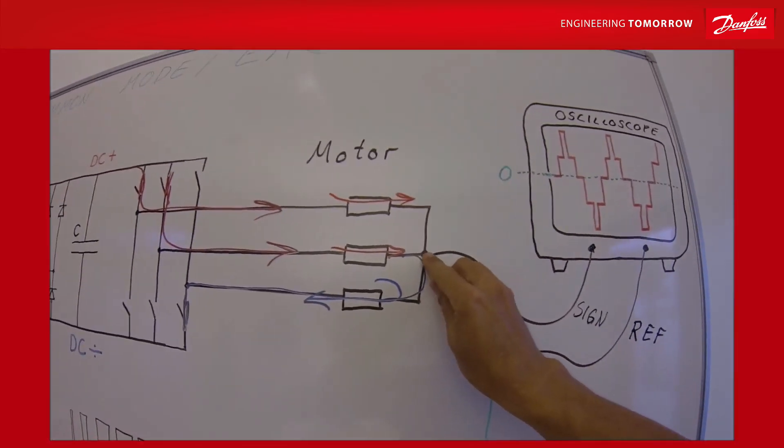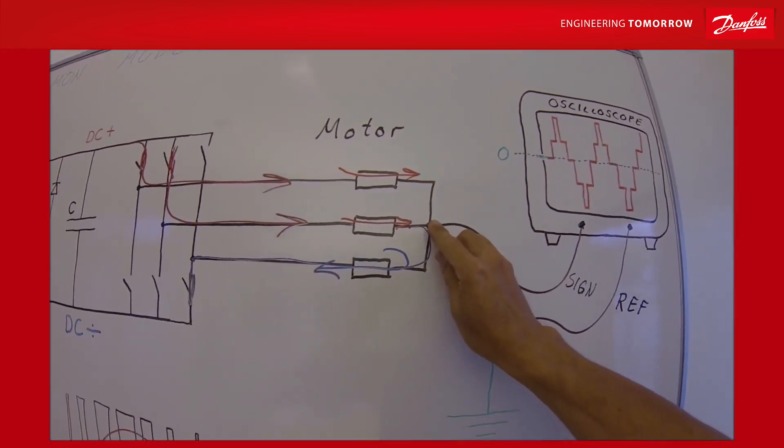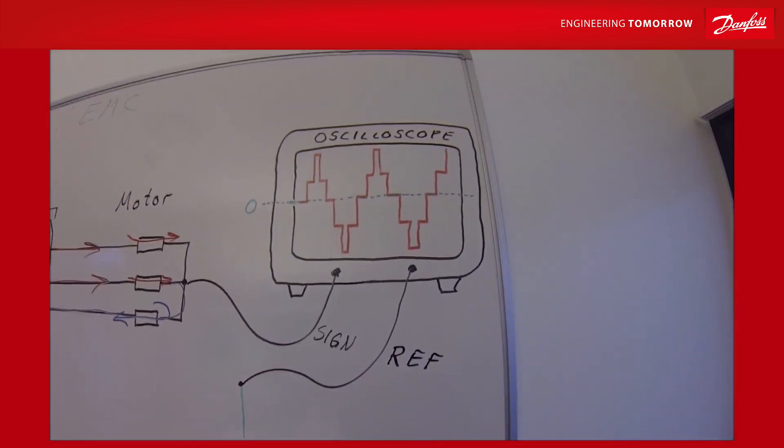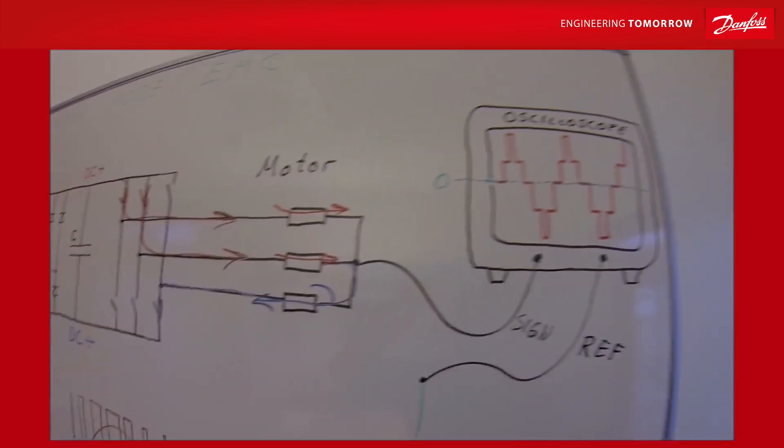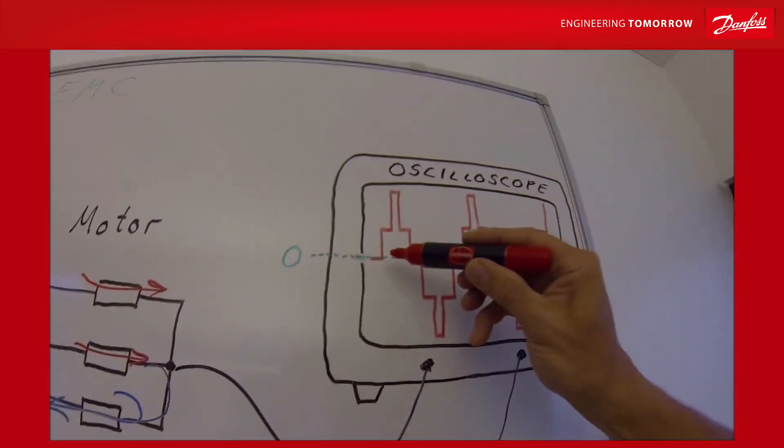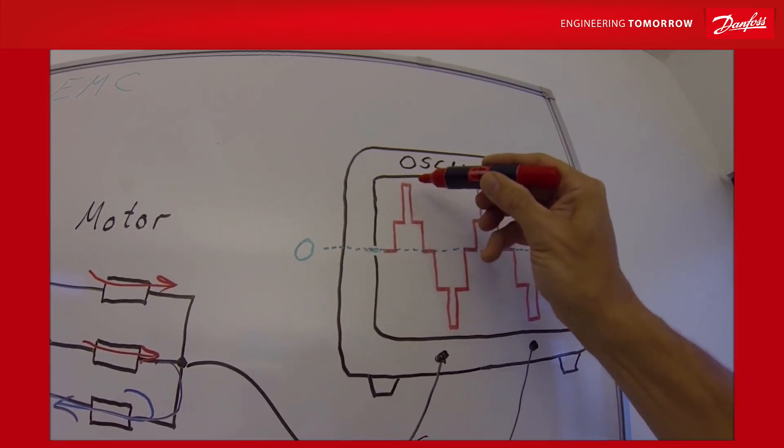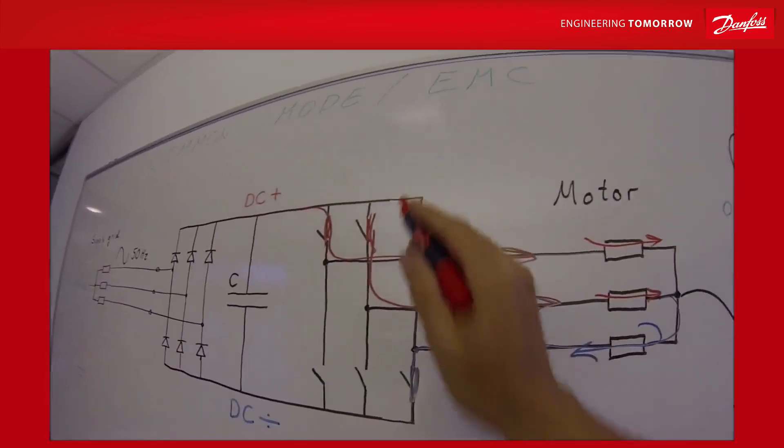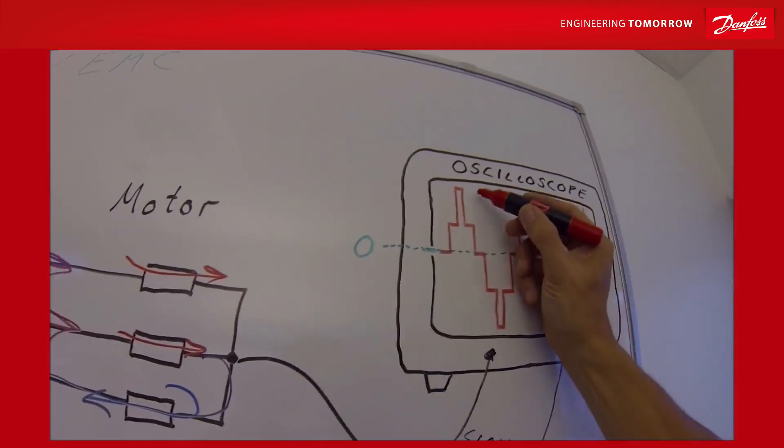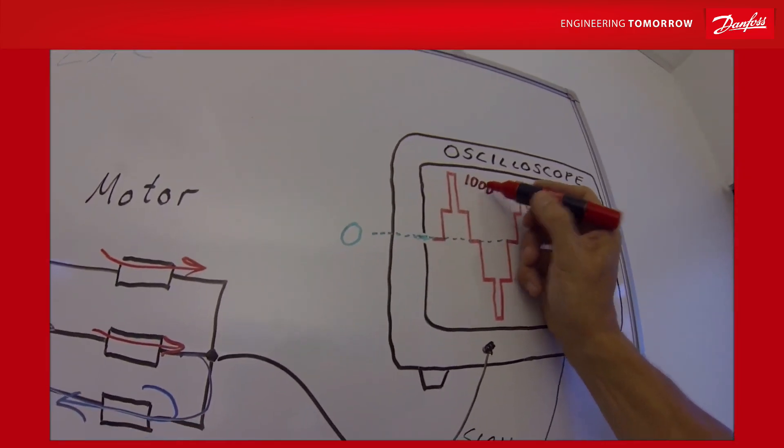What happened with this neutral point in the motor then? Well, if you look at it in our oscilloscope, we will see that we actually have lifted the star point up. And this can be quite high. It can be the full DC voltage, so we are talking about here 1000 volts.